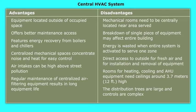An additional advantage is that regular maintenance of centralized air filtering equipment results in long equipment life. Disadvantages of a central HVAC system include: mechanical rooms need to be centrally located near the area served, breakdown of a single piece of equipment may affect the entire building, energy is wasted when the entire system is activated to serve one zone, direct access to outside is needed for fresh air and equipment installation, and rooms for heating, cooling, and AHU equipment need ceilings around 3.7 meters or 12 feet high, with large distribution trees and complex controls.